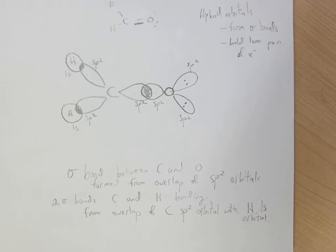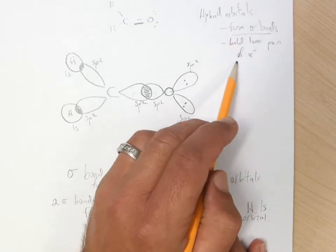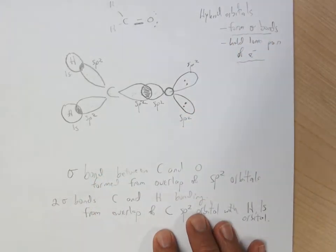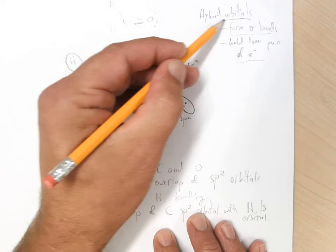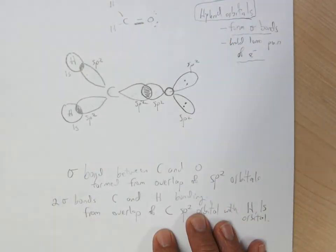So the hybrid orbitals will form the first bond between any two atoms, and then hold the lone pairs of electrons, and that's where the electron domain geometry comes from, and why there's such a strong link between which hybrid orbitals you use, what the hybridization of the central atom is, and what the geometry of the molecule is.